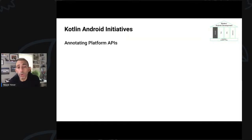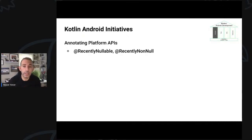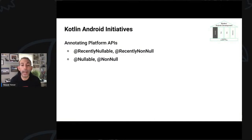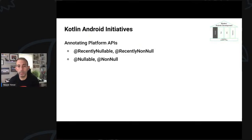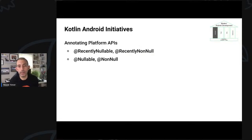Also, we annotate platform APIs with recently-nullable, recently non-null, and nullable and non-null annotations. This is because the platform APIs in Android are written with Java, which means if you call a platform API you might be receiving a null object or an object with some value. With these annotations, we can tell you if you are expecting a null value or not. The difference between 'recently' and 'nullable' annotations is that 'recently' gives you a warning if there's a chance you'll get a null value, while the 'nullable' annotation will break your code.